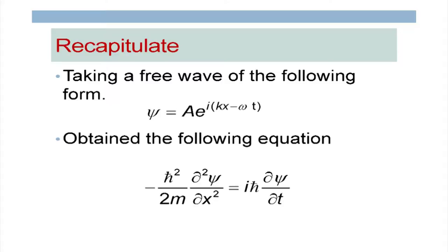This particular function has to be in complex form. We started with a complex function a·e^(ikx − ωt), and using that we eventually obtained a particular equation. That last equation is what we did last time.